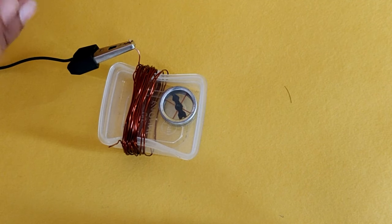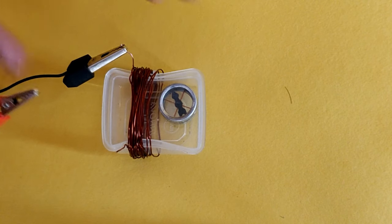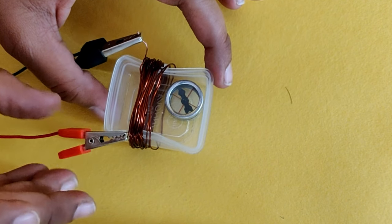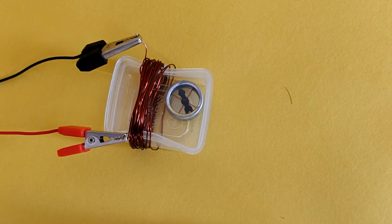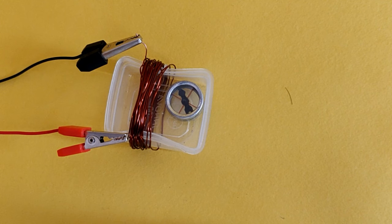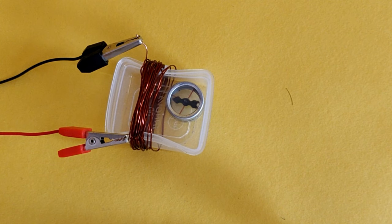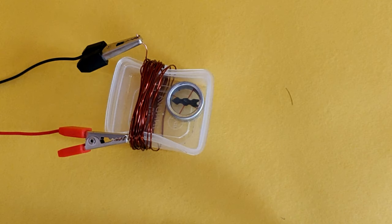Now, let's try reversing the crocodile clips on the two ends of the wire. Observe in which direction the needle is now pointing. You will see it is pointing to the direction opposite to the one it was pointing to before.